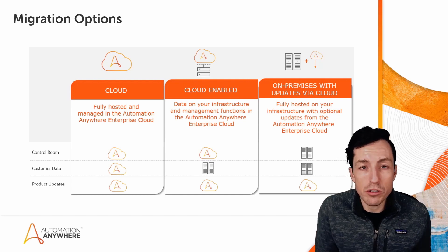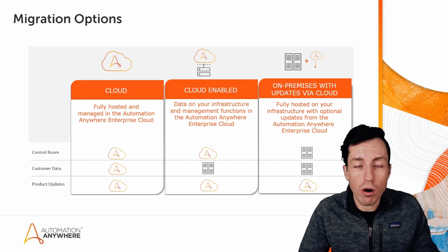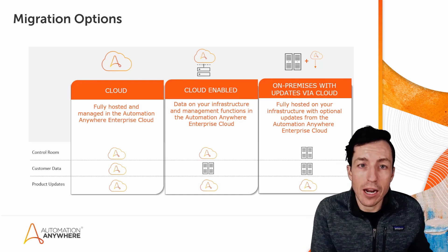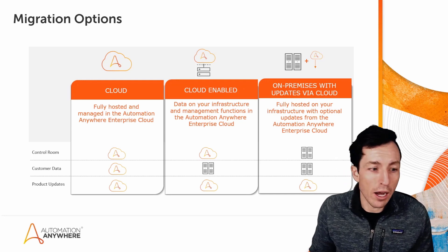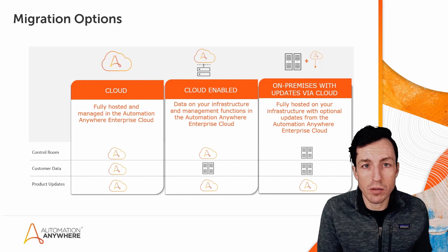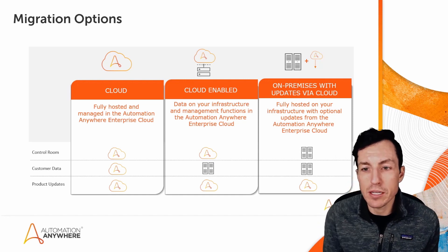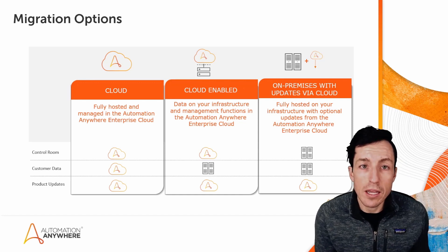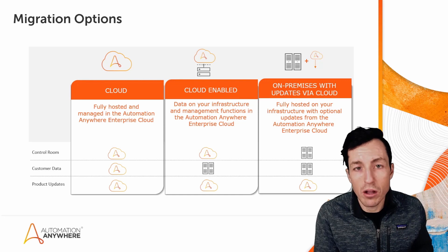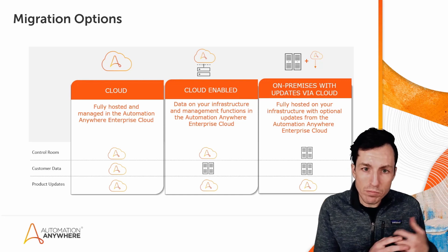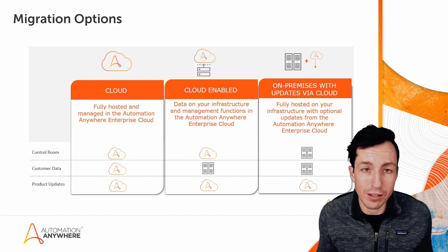The middle option is a cloud-enabled solution where essentially your data, your databases, and your control room are running locally but you are connected to the Automation Anywhere cloud and updates can be pushed to your local environment. In this case your control room has some components in cloud and some components running locally. The third option is on-premises with updates via cloud, where your database, control room, and all of your data runs local in your environment.